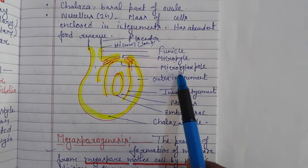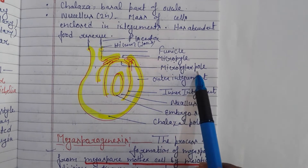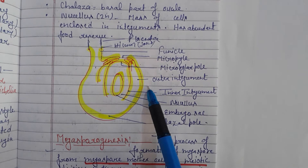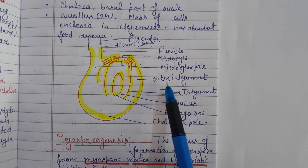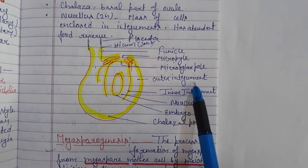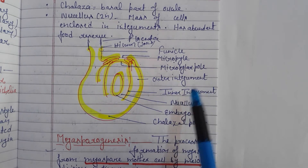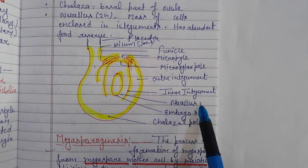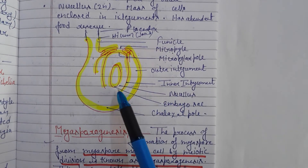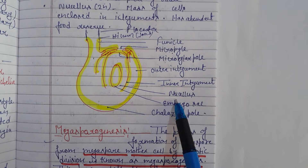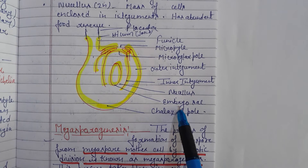The integuments are protective layers — the outer integument is 2–3 layers thick and provides protection. Inside is the nucellus, which is a nutritive agent providing nutrition to the developing embryo, and next is where the embryo sac forms.